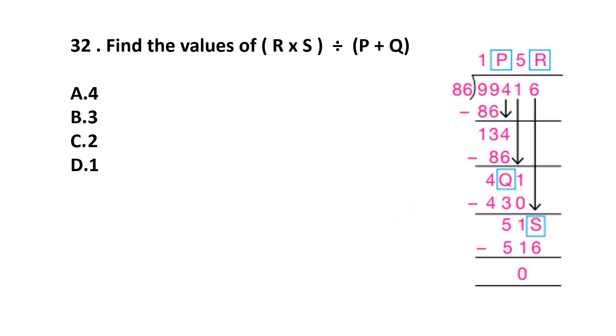Question number 32. Find the values of R multiplied by S divided by P plus Q. This question is given. Here, 99,416 is divided by 86. 86 ones are 86. It is given. Then if we subtract, 9 minus 6 is 3, 9 minus 8 is 1. We took 4 here. Again, it is divided. Here, it is written 86. So P is 1. 86 ones are 86. Then we subtract. 14 minus 6 is 8. Q is, this is 8. Q is 8.